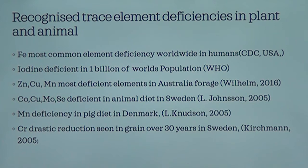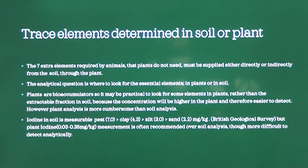This slide gives a general view of deficiencies in metals. Iron is the most deficient element in the world — not so much because it's lacking, but because of lack of uptake and diversity of food, especially in African countries. Rice species are also very poor in iron content. Iodine is also very deficient — about a billion people in the world are deficient in iodine at any one time. Copper, zinc, and manganese are also deficient in most forages in Australia and across Europe. In Sweden, the level of chromium in grain has dropped drastically over a 30-year period.